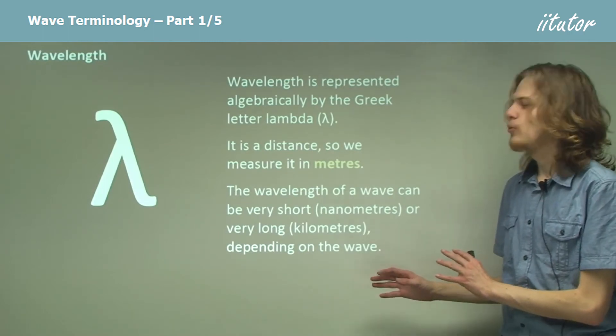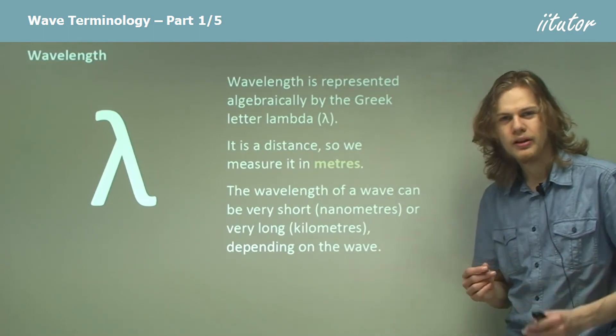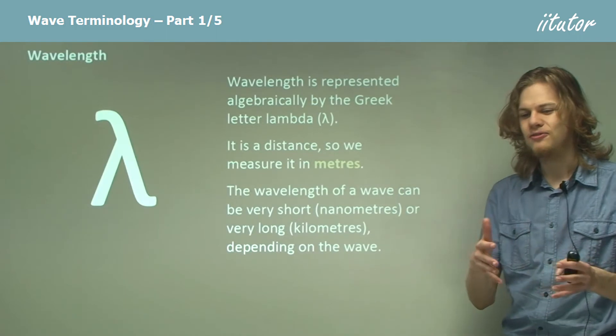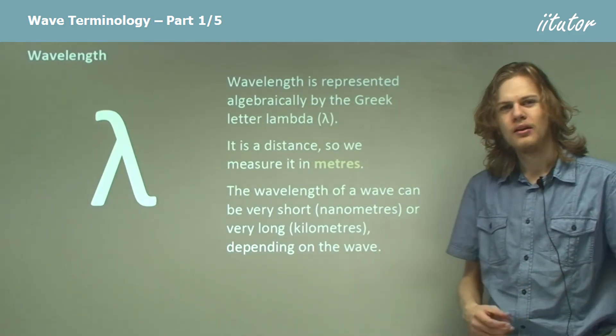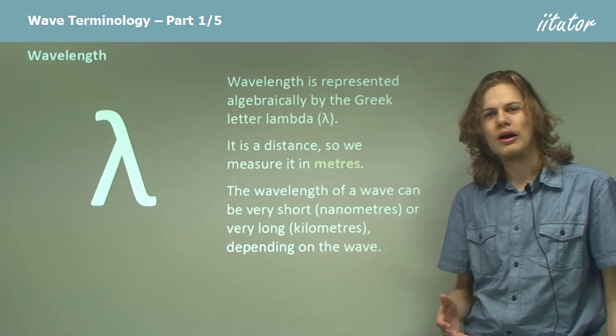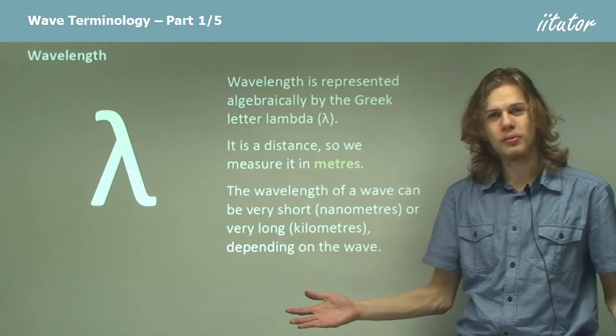The wavelength of the wave can be very, very short, things like on the scale of atoms, or it can be very, very long. There are some waves, for example, which might have a wavelength of many hundreds of meters or even kilometers.